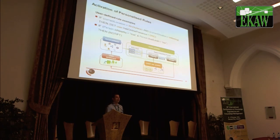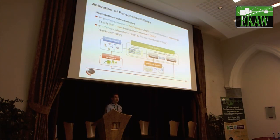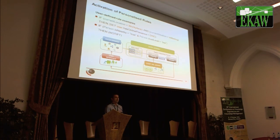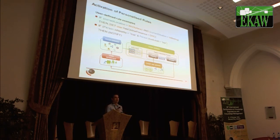The second point is based on the context information and also the information stored in the core information model. Through the user interface, we want to allow the user to directly define context-driven rules. For example: if the current location is an instance called 'workplace' and the current situation is an instance called 'meeting,' then change the online presence. Or, if any person is nearby and the person's trust level is low, then notify the user. The items in blue are ontology classes and the items in orange are instances.